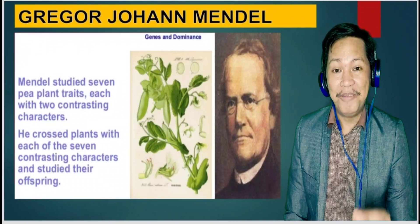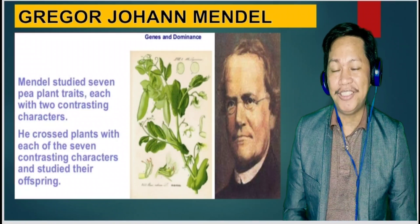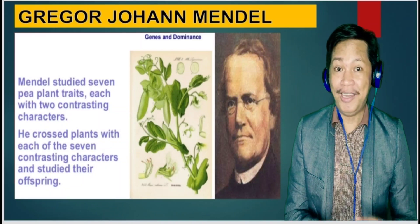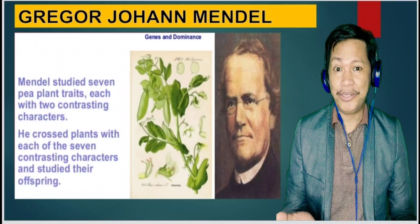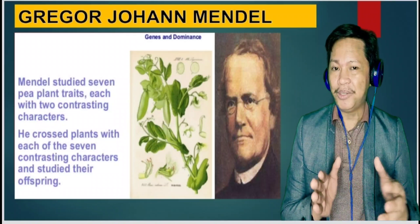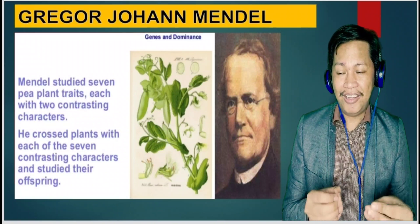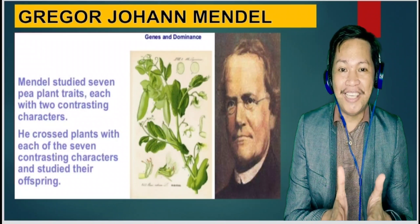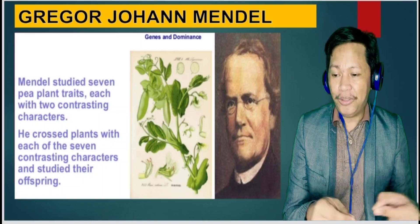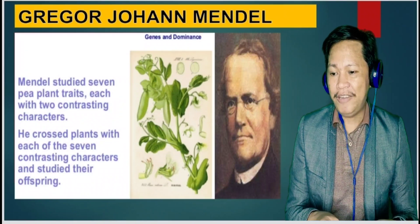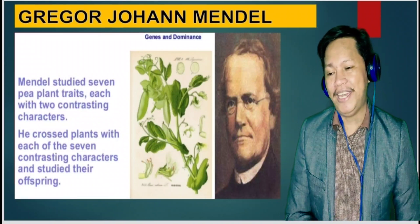Mendel studied seven plant traits, each with two contrasting characters. For height, we have tall and short; for seed color, we have green and yellow, and so forth. What he did was cross plants with each of the seven contrasting characters and study their offspring. He combined them through fertilization and then observed the resulting offspring.